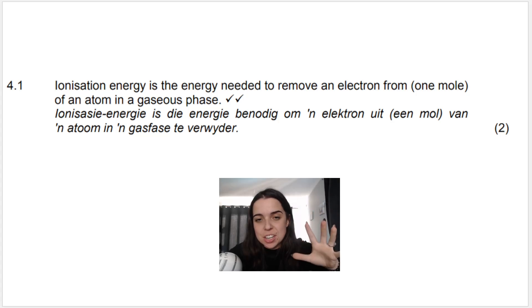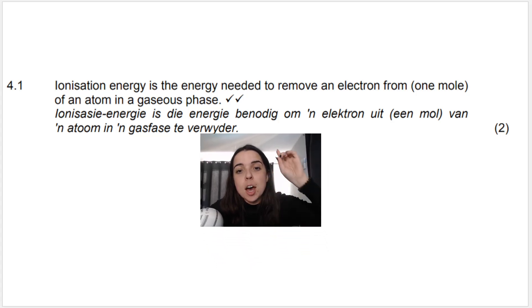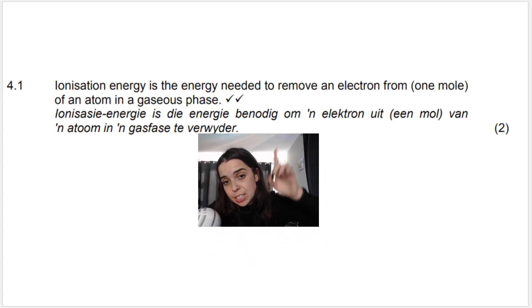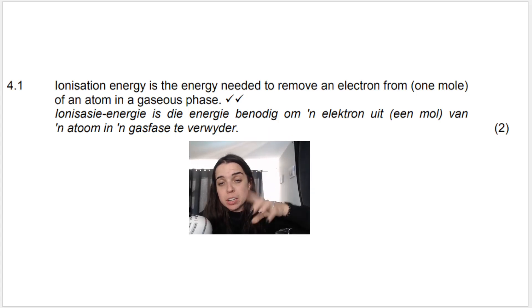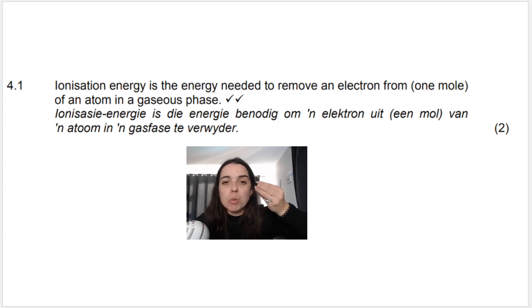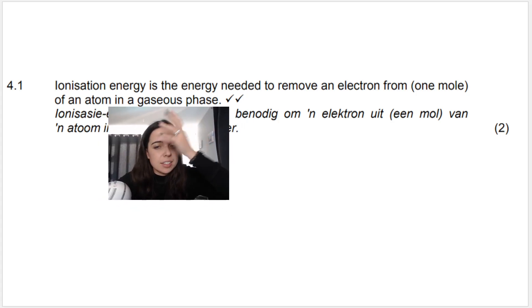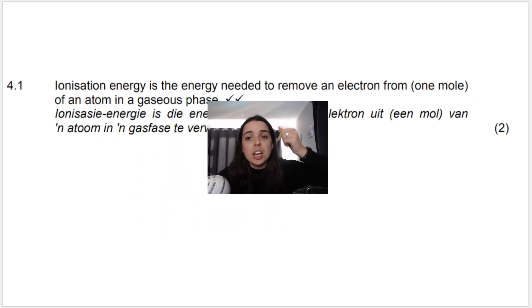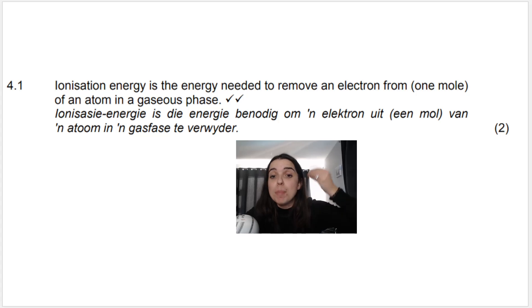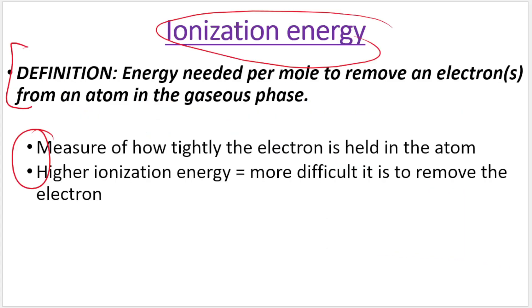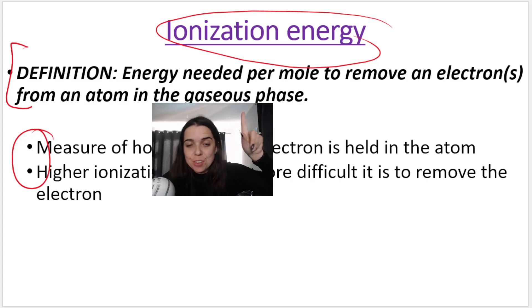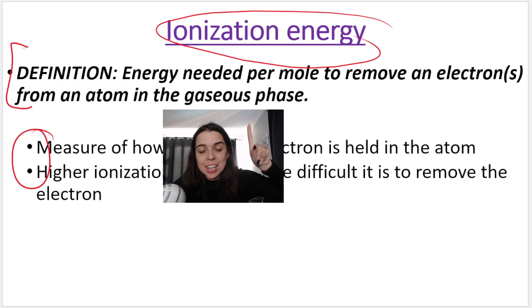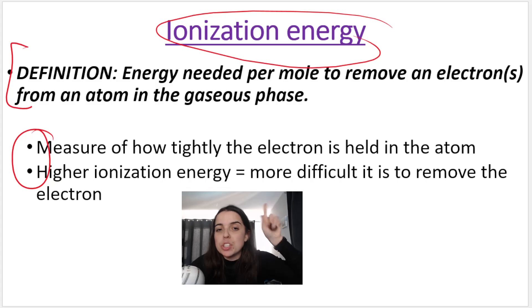If they ask you for the definition you have to give the proper definition as stated. You can't leave out words. You have to say in the gaseous phase, you need to say energy needed, you should say per mole. What I have in italics is the proper definition for ionization energy, and the rest is just a description of what it is.